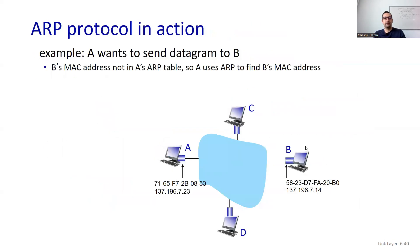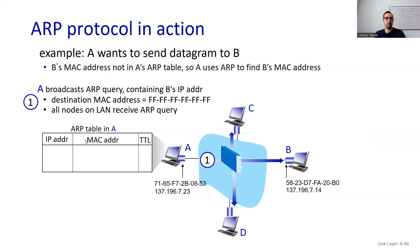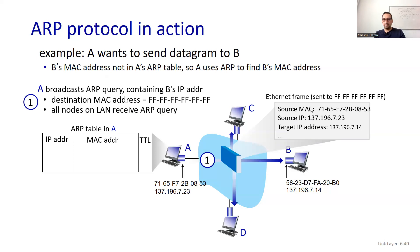Example: A wants to send a datagram to B, but B's MAC address is not in A's ARP table. So A uses ARP to find B's MAC address. Since you don't know it, you have to broadcast and learn it — this is also what Wireshark listens to. A broadcasts an ARP query containing B's IP address. The destination MAC address is filled with all ones — 48 ones, which become FF-FF-FF-FF-FF-FF in hexadecimal notation — so the datagram is broadcast to all devices in the subnet. The frame includes the source MAC, source IP, and target IP address.